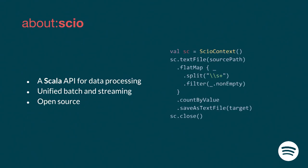So let's talk about Scio, which is our solution for data processing at Spotify. In a few words, Scio is a Scala API that we use for data processing. It works for both batch and streaming pipelines and it's open source. On the right side of the slide you have a simple example of what Scio can do — the infamous word count. You read text files, flat map on them, do stuff with it, count the values, save somewhere, and then close the context. It looks very much like the Scala collections API, or what you could do with Spark.